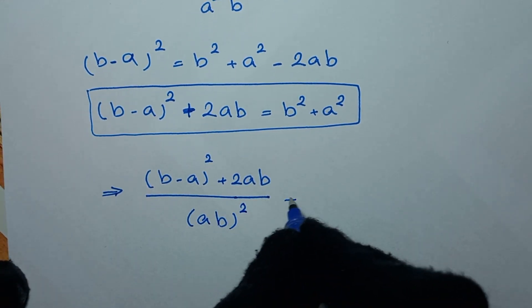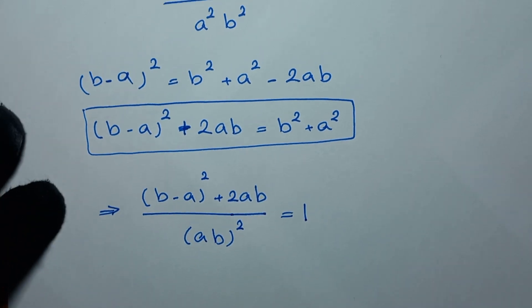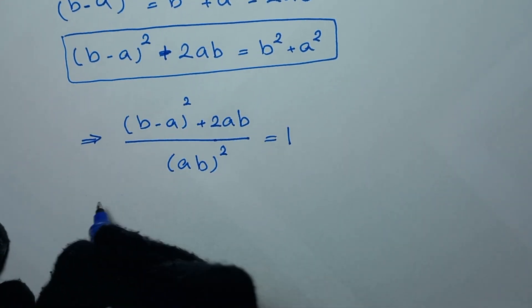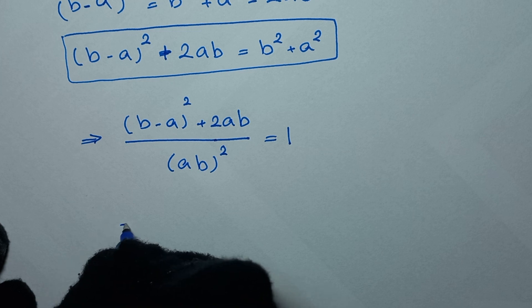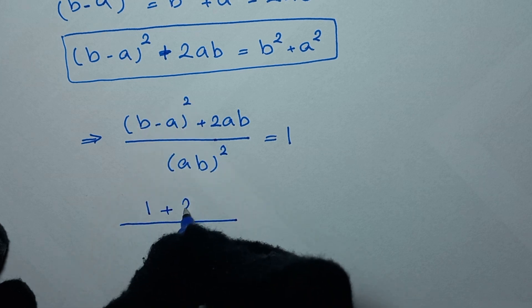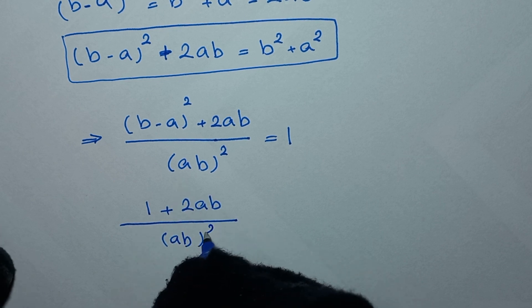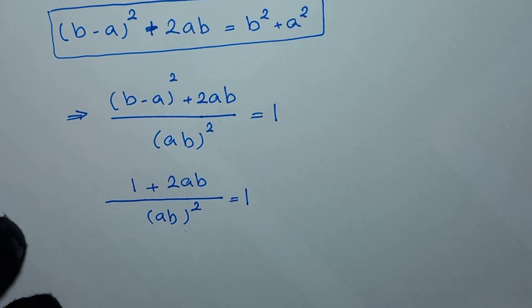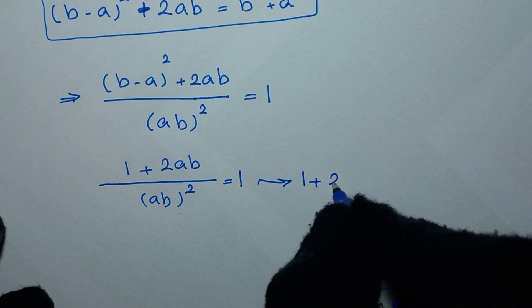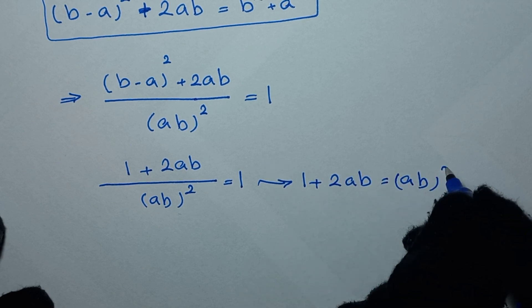This equals 1. Since b - a = 1, we substitute: (1² + 2ab) / (ab)² = 1, which gives (1 + 2ab) / (ab)² = 1. Using cross multiplication, we get 1 + 2ab = (ab)².